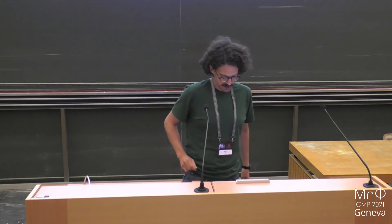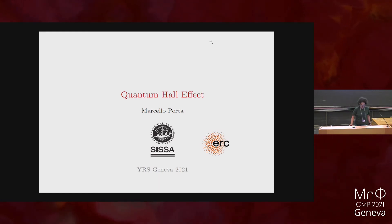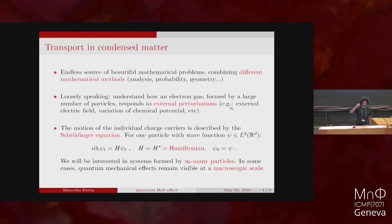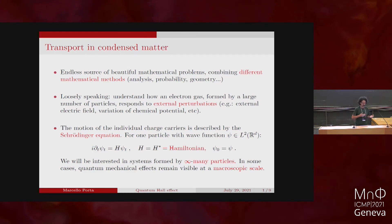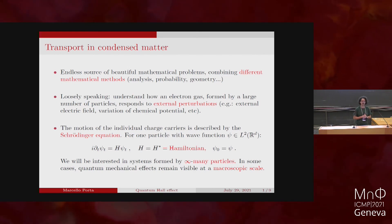This is going to be about transport in condensed matter systems from a mathematical physics viewpoint, and the effect I will discuss is the quantum Hall effect. Transport in condensed matter is really an endless source of beautiful mathematical problems that combine lots of methods — asymptotic and topological methods and so on.